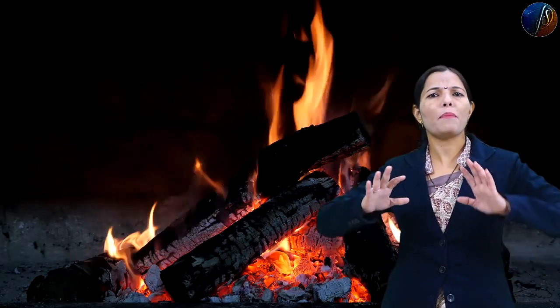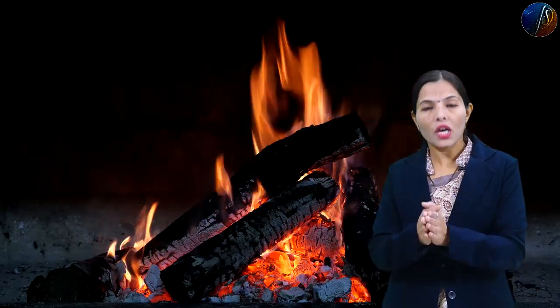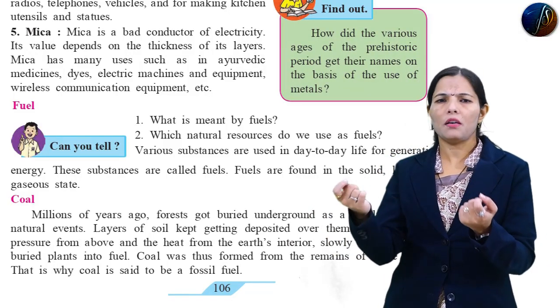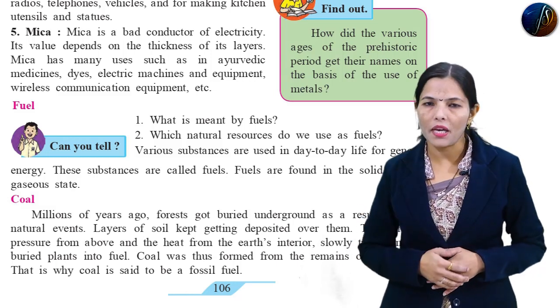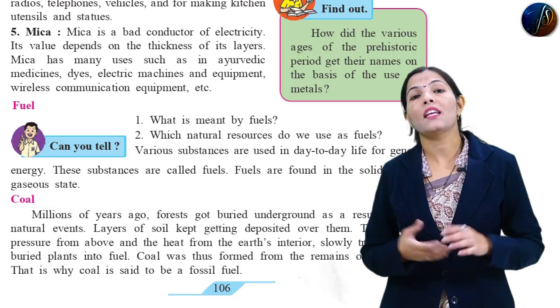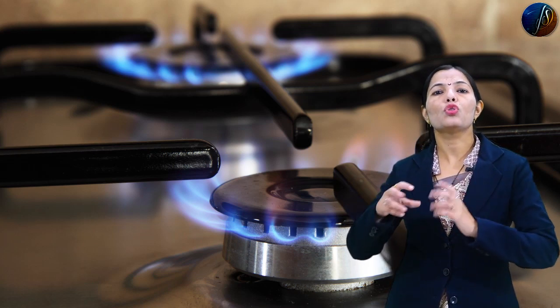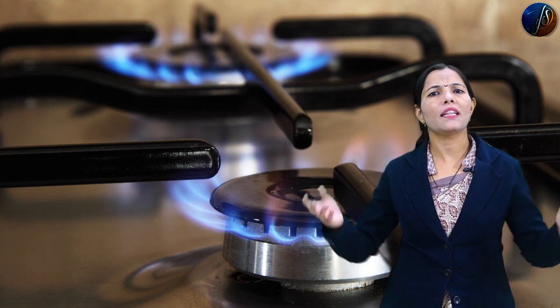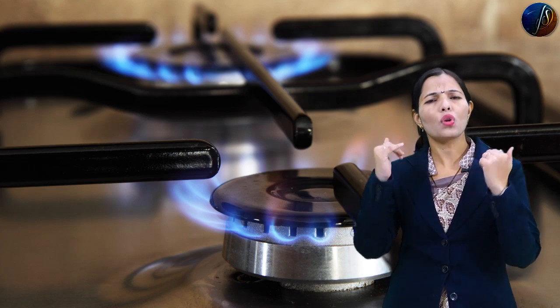The energy produced from fuel is in the form of heat energy, light energy, and electric energy. For example, an electric geyser — when you switch it on, the electricity flows and is converted into the form of heat energy.